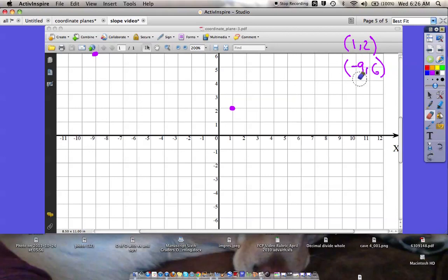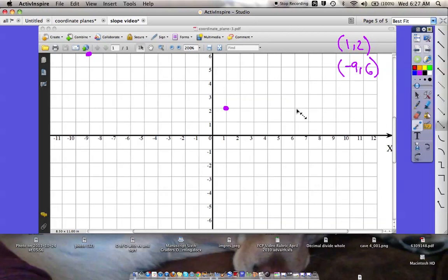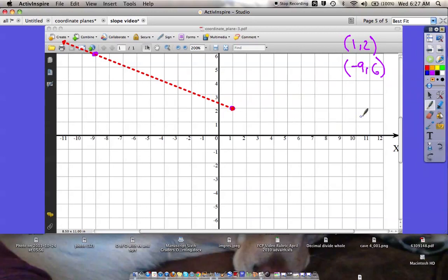If they don't give you the line and they just give you these points right here, again we've got to draw it out. You're going to need some graph paper. 1, 2 and negative 9, 6. I've already got them on here, so I'm going to draw my line. There we go. Now I need to find the slope. I already know that this one's going to be negative because it's going in this direction. It's going bottom right to top left.